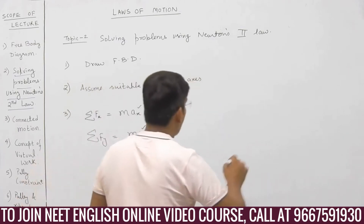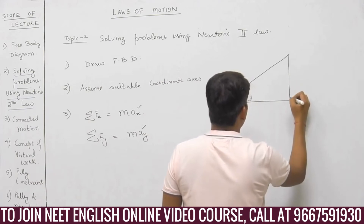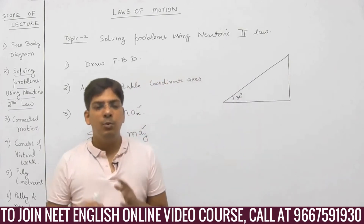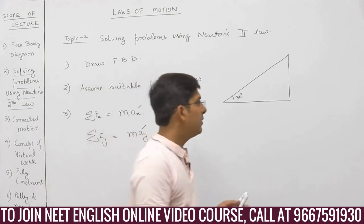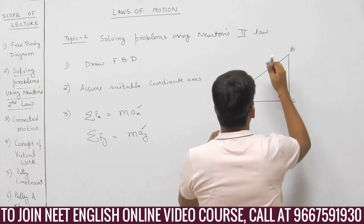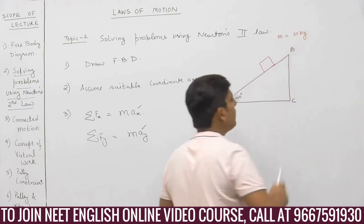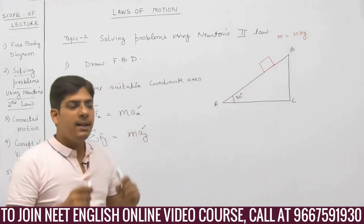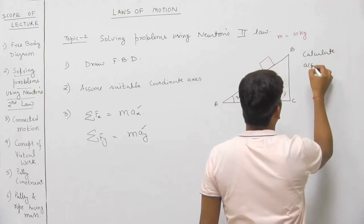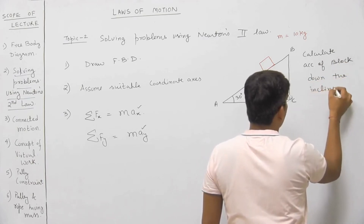Let us take the easiest of all examples. This is an inclined plane. The angle is 30 degrees. I am not mentioning any friction since there is no friction — it is a smooth surface. We will deal with friction afterwards. There is a block; mass of the block is 10 kg. You have to calculate the acceleration of the block down the inclined plane.